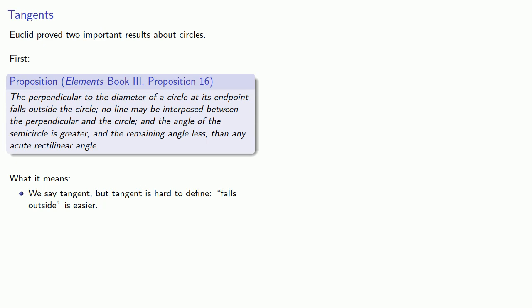Euclid also claims that we can't wedge another line between the tangent and the circle. In other words, the tangent is unique.